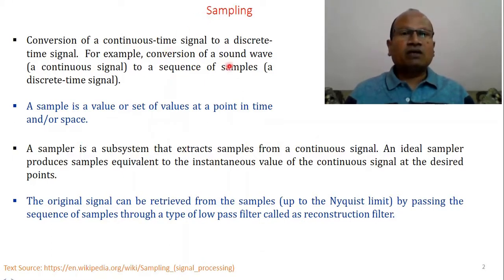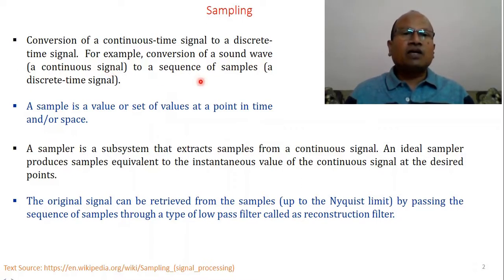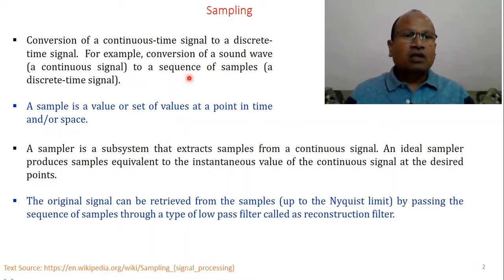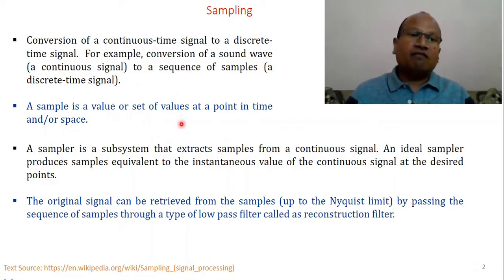For example, conversion of a sound wave — an audio signal which is a continuous wave — it can be converted into a sequence of samples in the form of a discrete time signal. When you want to process a sound or audio signal, it has to be converted first into a discrete time signal, which is nothing but a signal in the form of a sequence of samples. A sample is a value or set of values at a point in time and/or in space.